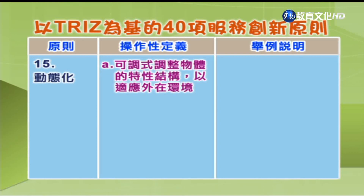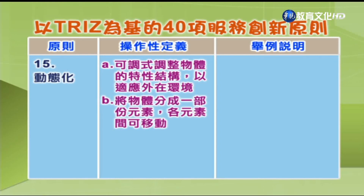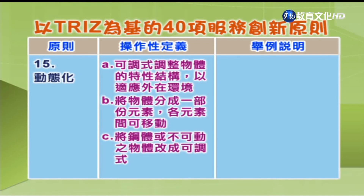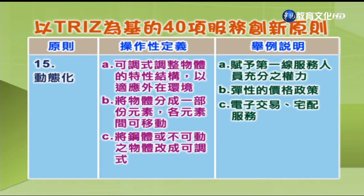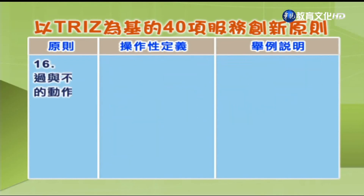第15项「动态化」：A.可调式调整物体的特性结构以适应外在环境；B.将物体分成一部分元素，各元素间可移动；C.将钢铁或不可动的物体改成可调式。举例：A.赋予第一线服务人员充分的权利；B.弹性的价格政策；C.电子交易与宅配服务。